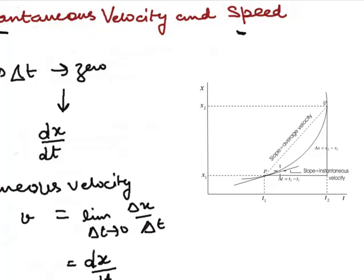As point Q approaches point P in this limit, the slope of the chord PQ becomes equal to the slope of the tangent of the curve at point P. In the figure you can see that this slope gives the instantaneous velocity of the particle at point P.